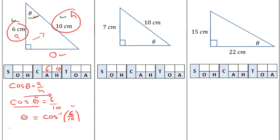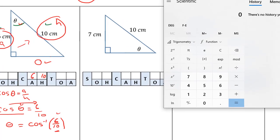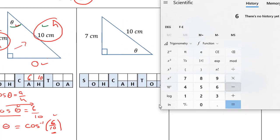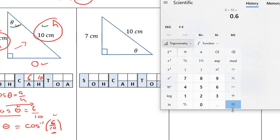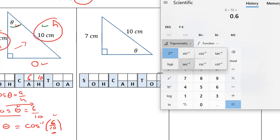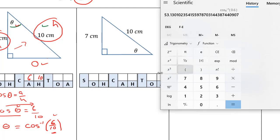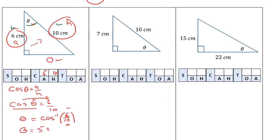I'm going to show you on the calculator how you can do this all in one step. Because I'm using a Windows calculator I need to calculate the value of the fraction first. So I'm going to go 6 divided by 10, hit equals, and I know it's 0.6. Now I've typed in my ratio, I can go into trig and second function and we're using the cosine inverse this time. And we now know that angle theta must be 53.13 degrees.